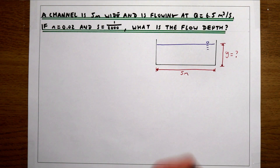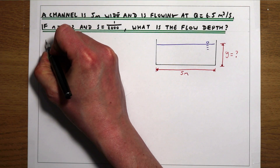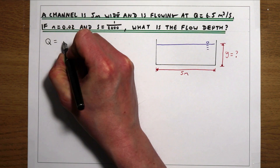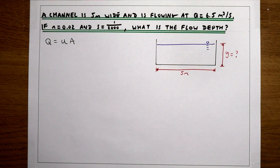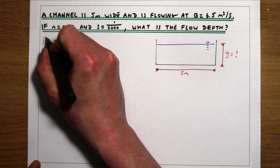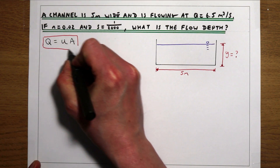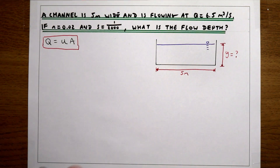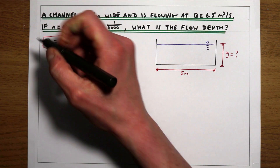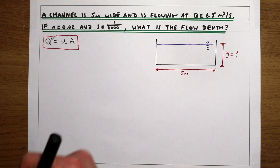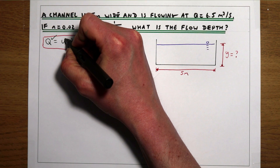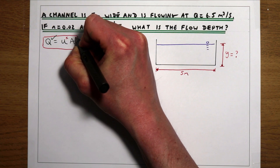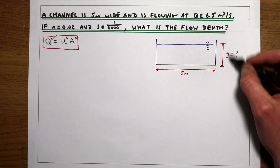If we begin at the same place as last time, with the continuity equation, we know that the flow rate is the velocity of the water in the channel times by the area of the water in the channel. We know what the flow is — we're given the flow — but we can't work out the velocity or the area because we don't have Y.